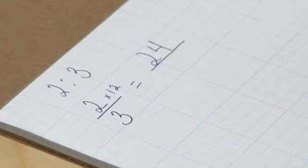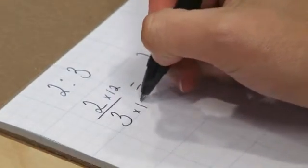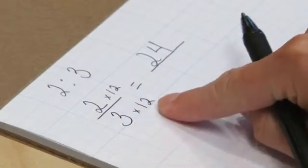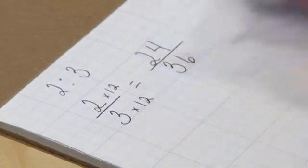What we do to our top number or our antecedent, we have to do to our consequence. So we have 3 times 12, and that equals 36.